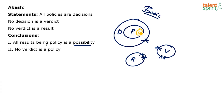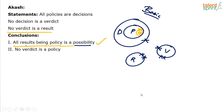One way of drawing the diagram is to draw results inside policies. Nothing is wrong — we are not going against the statement. The statement says no verdict is a result, and even in this case, verdict and results do not overlap. And all results are inside policies. So all results being policy is actually possible. I can draw it without violating any statement.